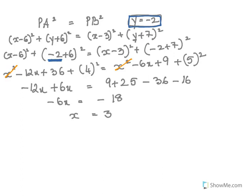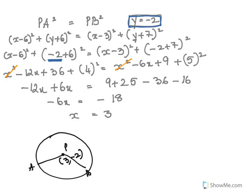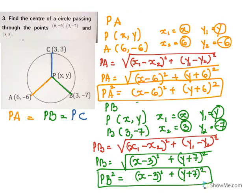So the center of the circle, which we had taken as P, is (3, -2). The property we used is that the radii of the circle — PA, PB, and PC — are all equal. We found each radius using the distance formula and equated them to find the center.